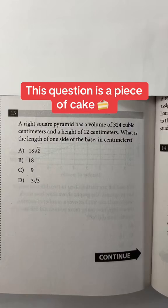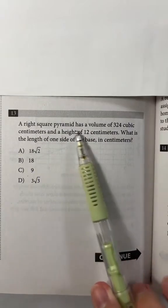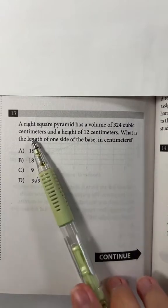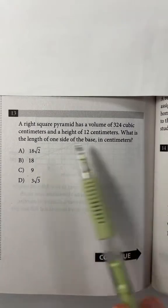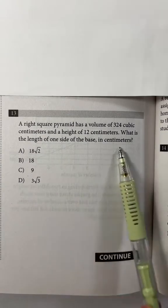This question is a piece of cake. A right square pyramid has a volume of 324 cubic centimeters and a height of 12 centimeters. What is the length of one side of the base in centimeters?